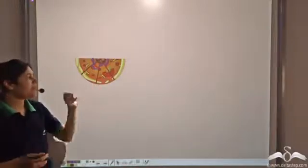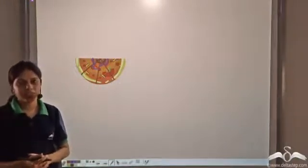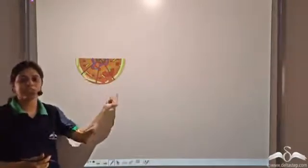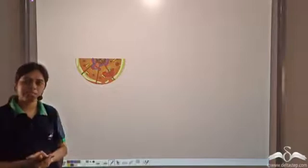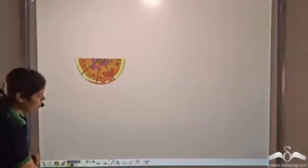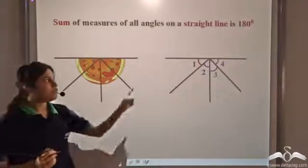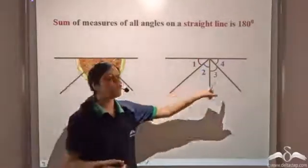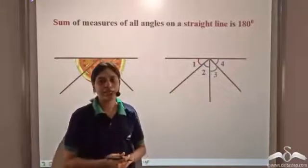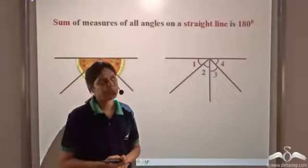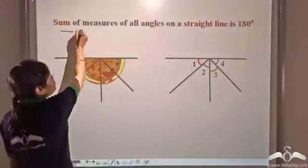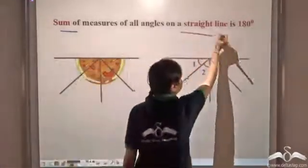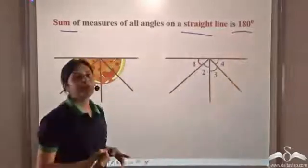So, no matter how many pieces you cut this pizza into, the sum of the angles of individual slices will always be 180 degrees. Or, we can say that no matter how many angles we make on a straight line, the sum of all the angles will be equal to 180 degrees. So, the sum of measures of all angles on a straight line is equal to 180 degrees.